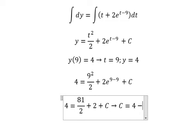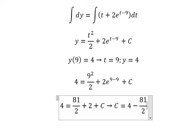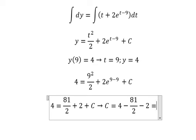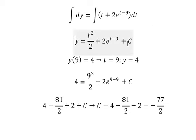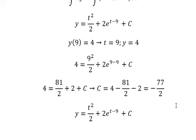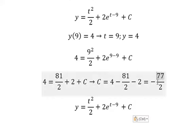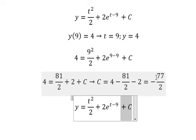That's about 4 minus 81 over 2 minus number 2, and we will get about negative 77 over 2. And let's say that we put about C equals to negative 77 over 2.